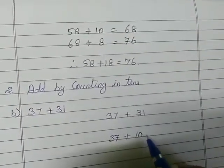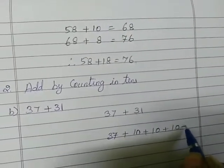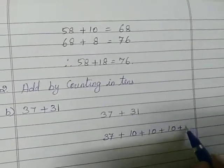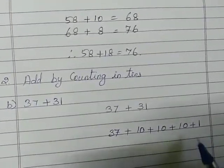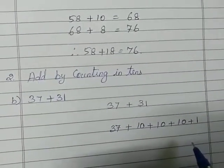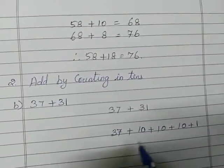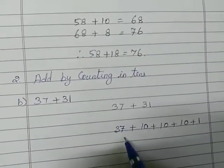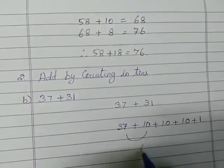So 10 plus 10 plus 10, and then bring down the 1s value — that is 1. Next, we just add one by one. 37 plus 10 equals 47.